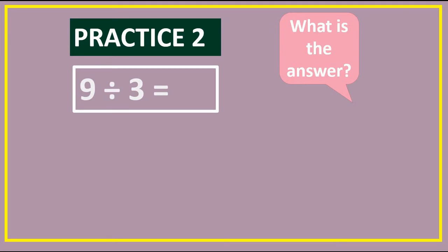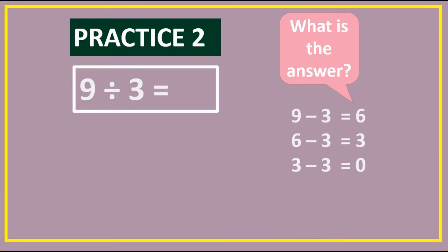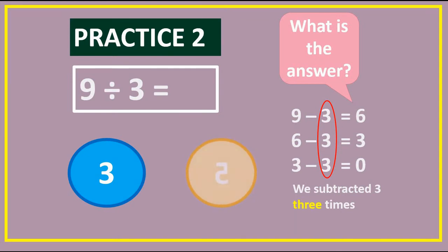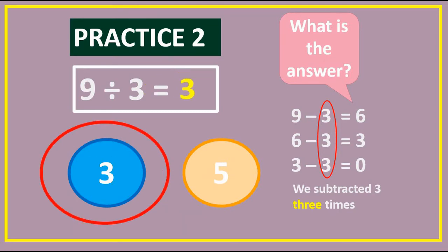Okay, 9 divided by 3 equals blank. What do we have to do? That's right, we have to subtract 3 over and over until we get to 0. Nine take away three equals six, six take away three equals three, three take away three equals zero. So how many times did we subtract three? We subtracted three three times. So the answer, or quotient, is three.